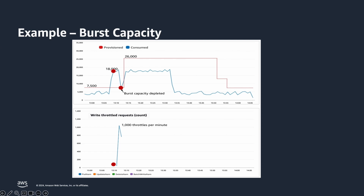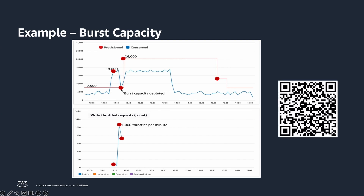At 13:11, however, the burst capacity runs out and the write rate drops to the provisioned amount, with all other requests throttled. The throttling continues until 13:13, when auto-scaling grows the provisioned capacity up to 26000 WCUs, which is enough to handle the spike. Finally, about 15 minutes after the spike has subsided, auto-scaling drops the provisioned amount back down. I would highly recommend you to scan the QR and read this blog regarding handling traffic spikes with Amazon DynamoDB's provisioned capacity.